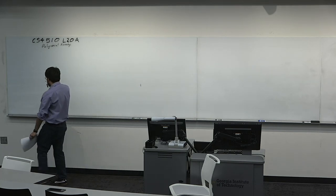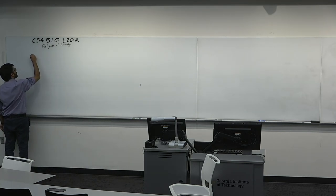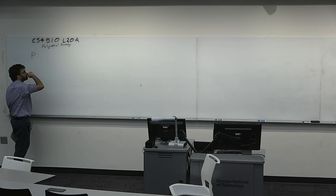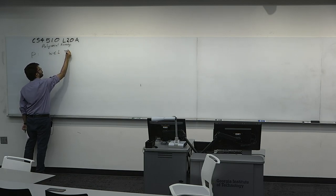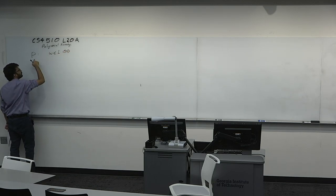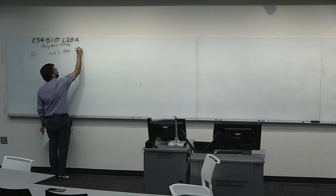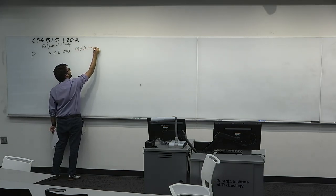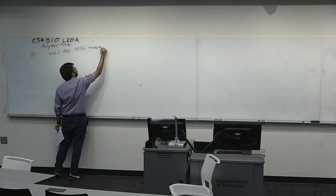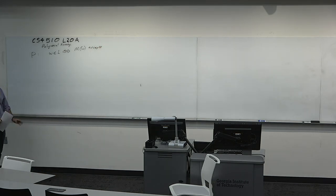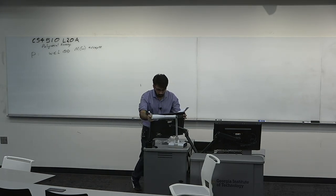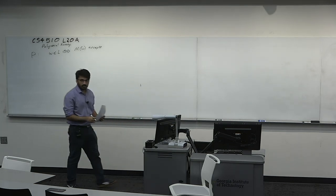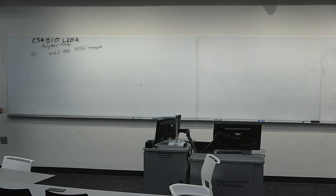Let's talk about P as a class. P is defined using a logical definition. We say W is in L, and L is in P, if and only if M on W accepts. M runs in polynomial time — M is a machine that runs in polynomial time and accepts the word W in a polynomial number of steps.